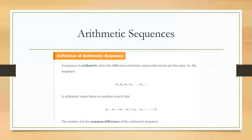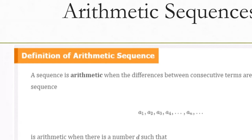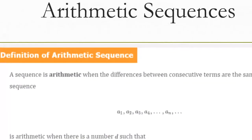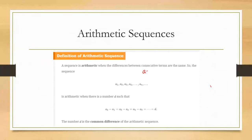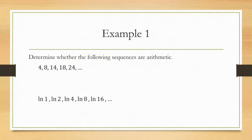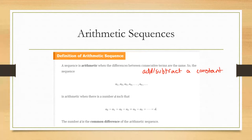A sequence is arithmetic when the differences between consecutive terms are the same — meaning you're adding or subtracting a constant each time. Another thing where you have a constant that's the same and each number increases or decreases by that constant is a linear equation, so an arithmetic sequence can basically be written as a linear equation. The difference acts as the slope.